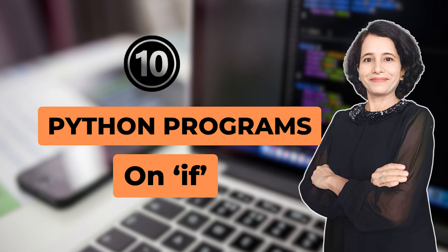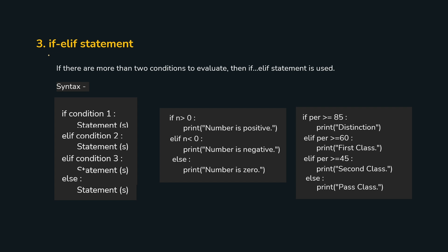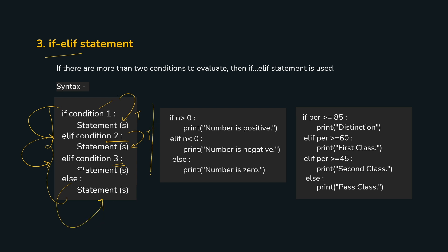The third form is if-elif, used when we have more than one condition. With if-else we can only check one condition, but with if-elif we can chain multiple conditions. If the first condition is true, that block executes; otherwise we check the next condition; and so on, with a final else when all conditions are false. For example, calculating grade based on percentage: if percentage is greater than 85, print distinction; elif greater than 60, print first class; and so on for other grades.